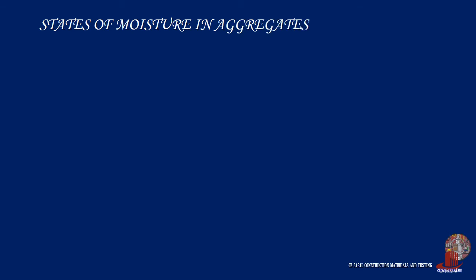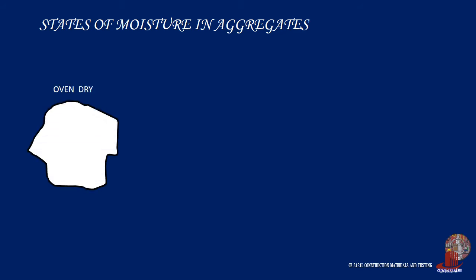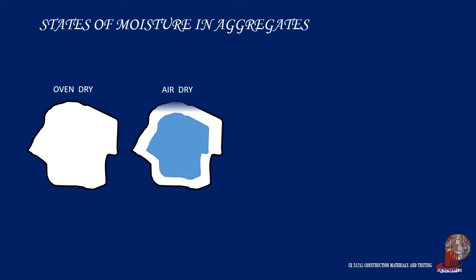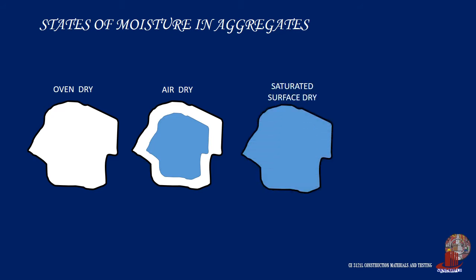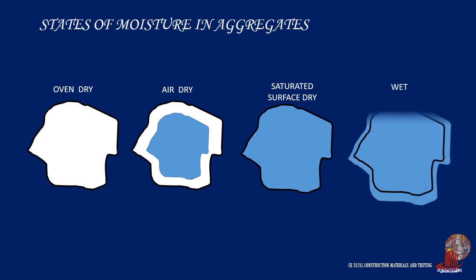Also considered for the topic of moisture content, let us discuss the different states of moisture in aggregates to better understand what we term as natural state. The four states are oven dry (OD), where the particle is dry from inside and out; air dry (AD), where the particle would be dry from the surface but moist from the core; saturated surface dry (SSD), which would have the particle saturated or moist until its surface; and the wet state, where there would be a film of water at the surface.